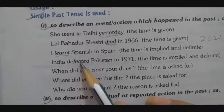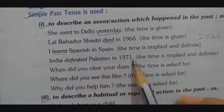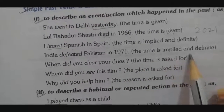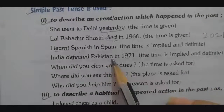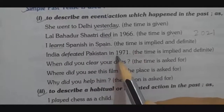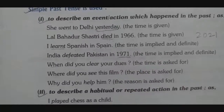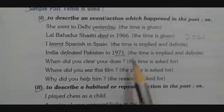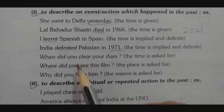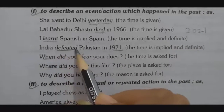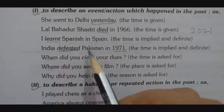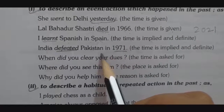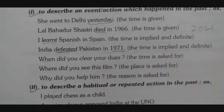Another example: 'India defeated Pakistan in 1971.' Here the time is implied and definite — 1971 is a past event. The verb 'defeated' shows a past action. India defeated Pakistan in 1971.